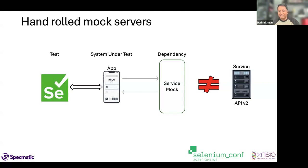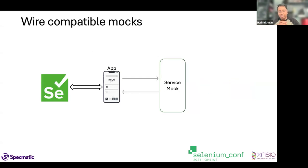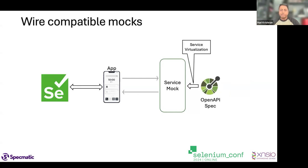Thanks for giving a nice segue. Yes — calling it a contract is interesting, stubbing the data. We want to stub the data but also verify that the stub data is representative of the real server. So what we did is we needed a way for the service mock to be truly representative of the actual service. We took the API specification of that service and ran that itself as a service virtualization server — thereby it's representative of what's happening.